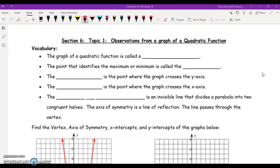So, let's go ahead and run through our vocabulary to start with. The graph of a quadratic function is called a parabola. The point that identifies the maximum or minimum is called the vertex.